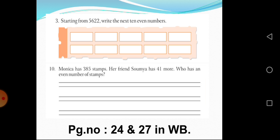Question number 10: Monica has 385 stamps. Her friend Soumya has 41 more. Who has an even number of stamps? You have to write who has an even number of stamps.